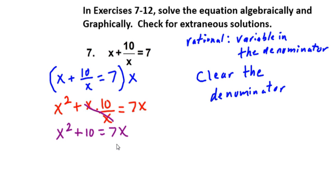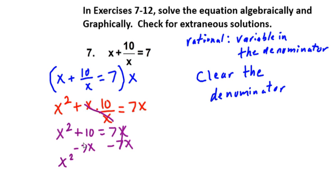We're going to go ahead and solve this quadratic equation. In most instances, what we're doing in solving quadratic equations is setting one side of the equation equal to 0. So we're going to subtract 7x from both sides of this equation. When we do that, we're going to end up with x squared minus 7x plus 10 is equal to 0.